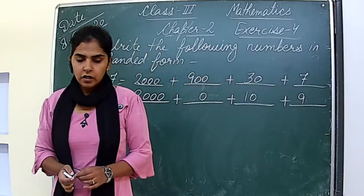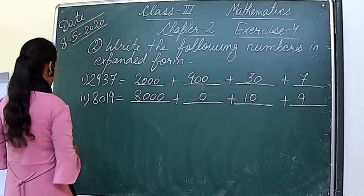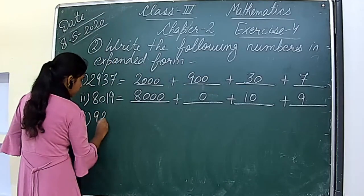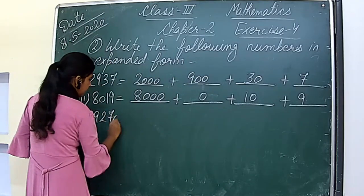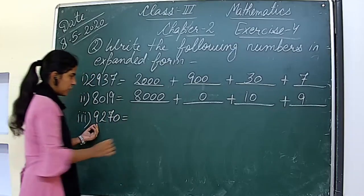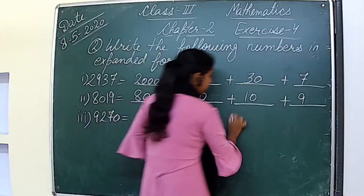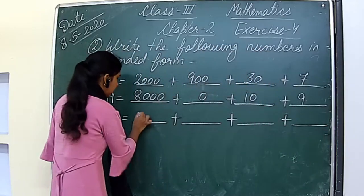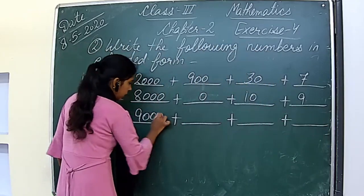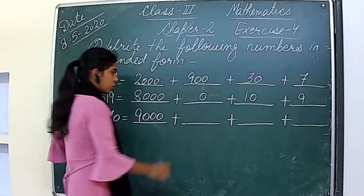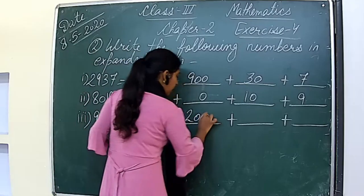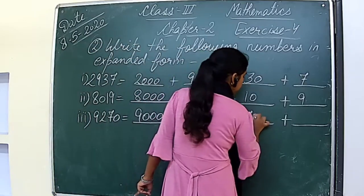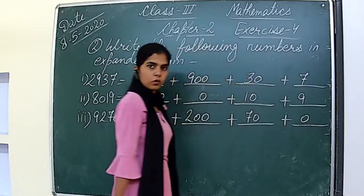The third part is 9270. Place value of 9 is 9000. Place value of 2 is 200. Place value of 7 is 70. And place value of 0 is 0.